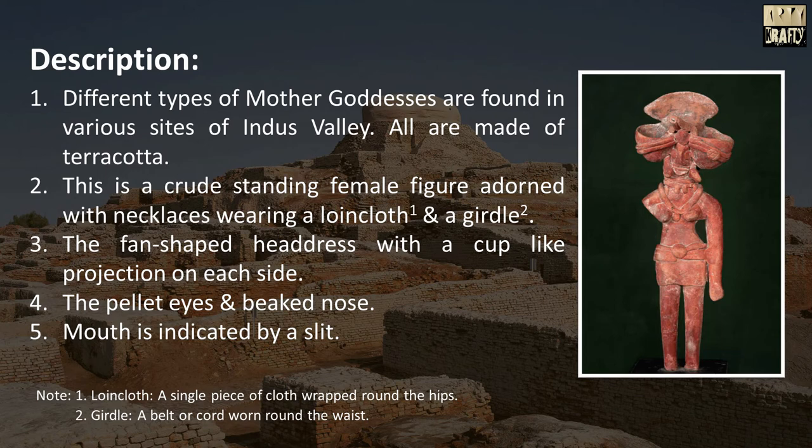Different types of mother goddesses are found in various sites of Indus Valley, all made of terracotta. This is a crude standing female figure adorned with necklaces, wearing a loin cloth and a girdle. The fan-shaped headdress has a cup-like projection on each side. She has pellet eyes, a beaked nose, and the mouth is indicated by a slit.